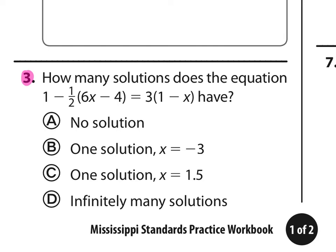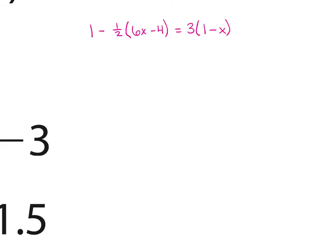Number 3: how many solutions does this equation have? I'm going to start by writing my equation where I have a little more space to work it out. The first thing we do is simplify. We'll bring down this 1, but then we have negative 1 half times 6X, which is negative 3X. Negative 1 half times negative 4 is positive 2. And on the right side, 3 times 1 is 3, and 3 times negative X is negative 3X.